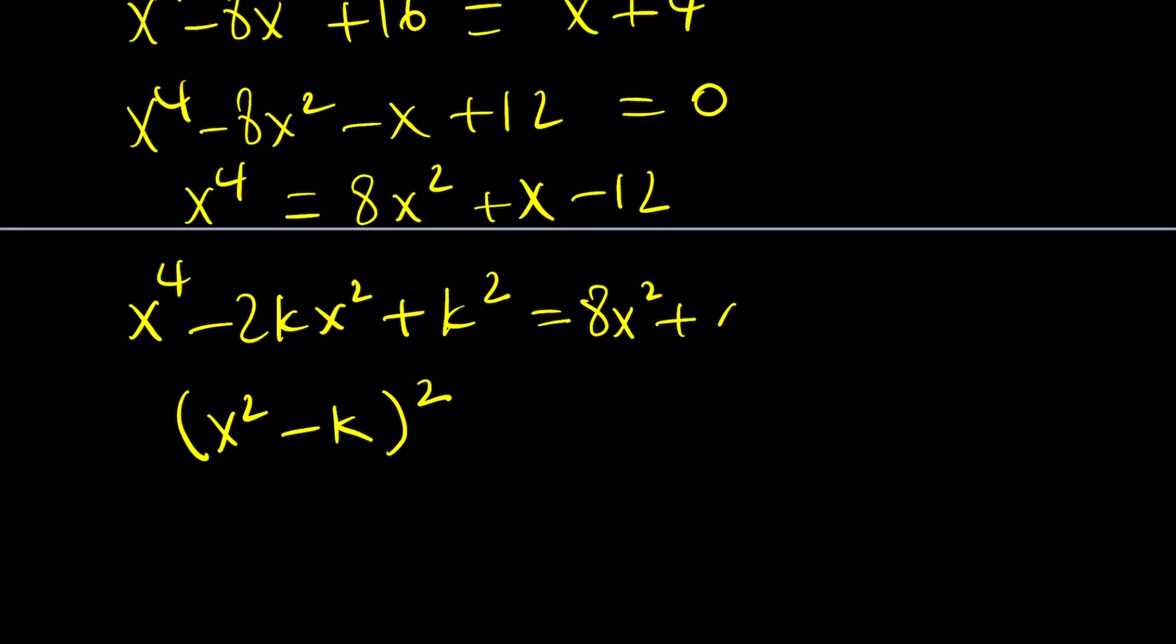So now we're going to be adding the same thing to both sides on the right hand side. So it's going to be 8x squared plus x minus 12 and then subtract 2kx squared and then add k squared. So let's go ahead and rearrange the terms on the right hand side. That gives us these two things. 8 minus 2k is going to be the new coefficient of x squared. And then we have plus x. That doesn't change. And then negative 12 plus k squared.